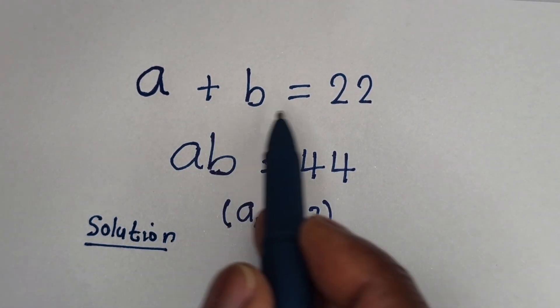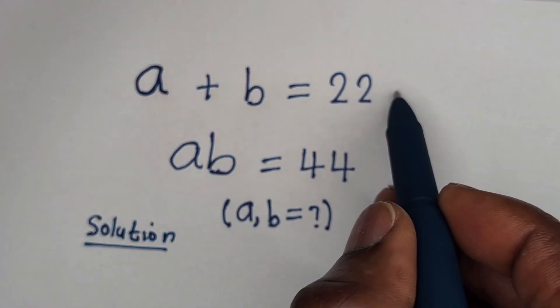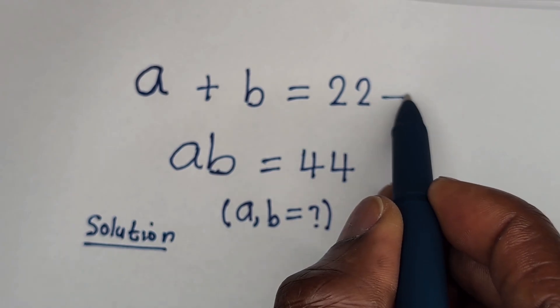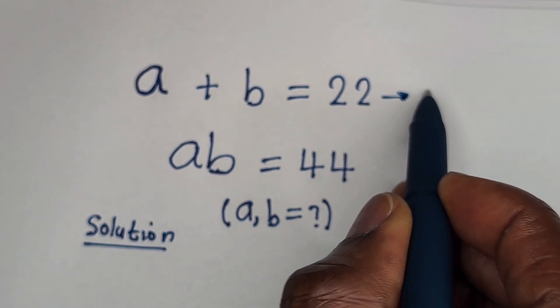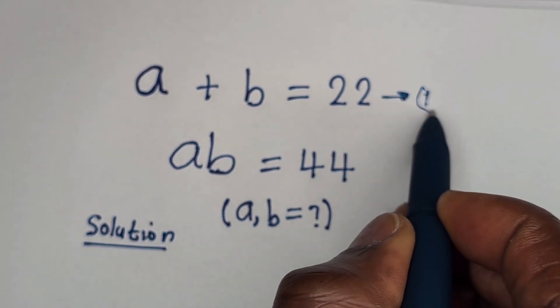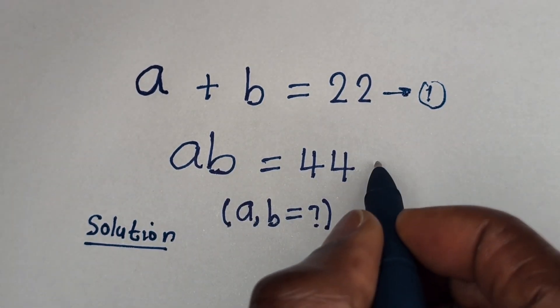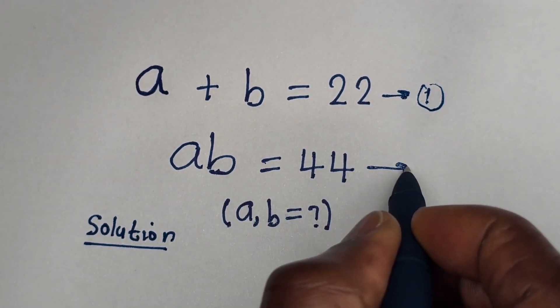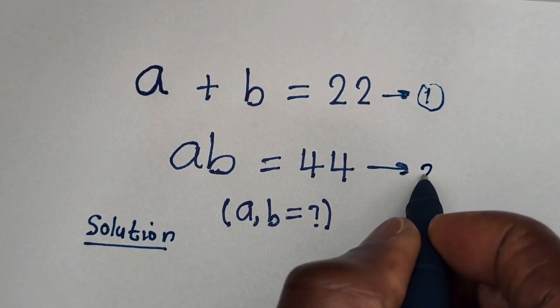A plus B is equal to 22 — let us call this equation 1. AB is equal to 44 — let us call this equation 2.